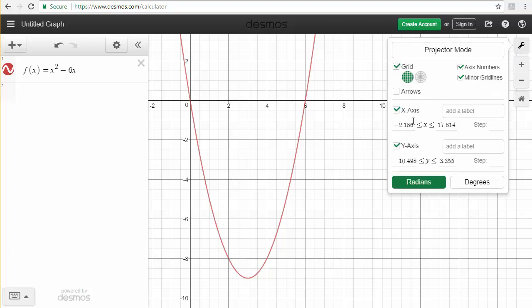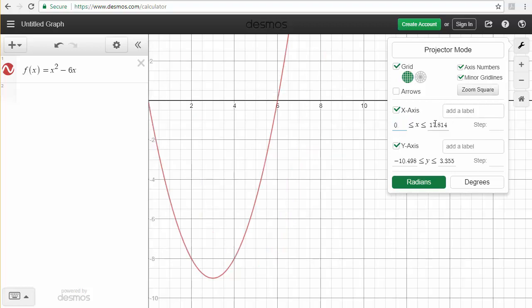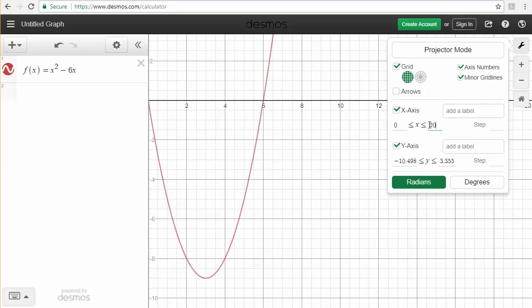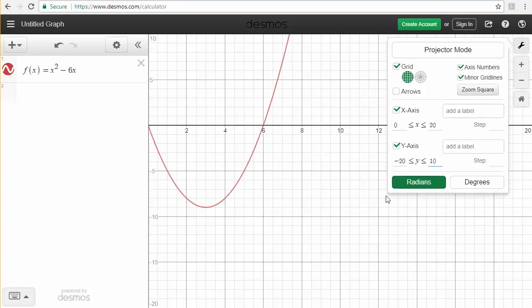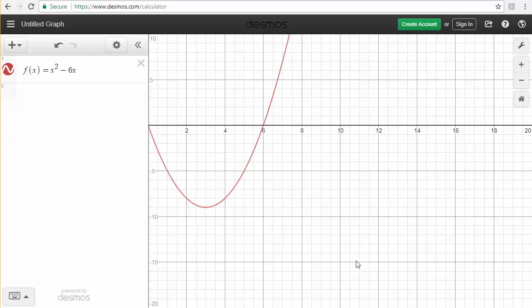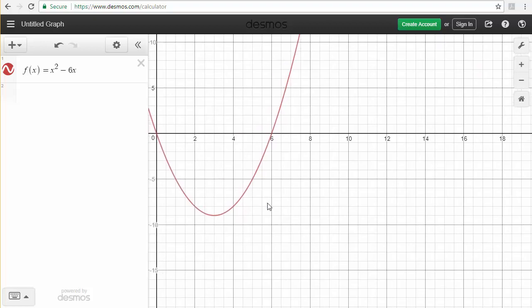Then you can go ahead and tell it you want to go from, say, zero to 20, and perhaps you want to go from negative 20 to positive 10. Click outside of that and you can see the graph in that window, and then maybe you can go ahead and play with it a little bit.